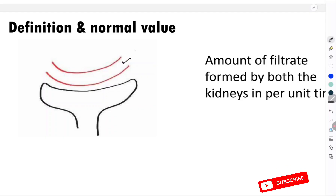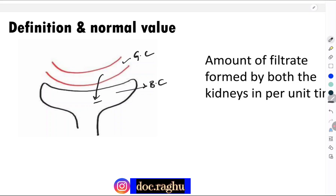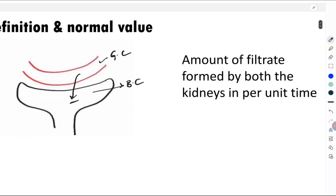In this diagram, what we are seeing here is the glomerular capillary and this is called the Bowman's capsule. What is happening is the plasma present in the glomerular capillary is undergoing a process of ultrafiltration and entering into the Bowman's capsule, and remember that this is the first step to occur in urine formation. So what is glomerular filtration rate? It is the amount of filtrate formed by both the kidneys per unit time.